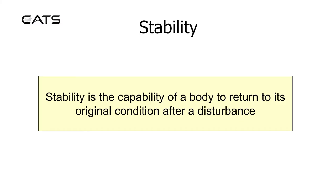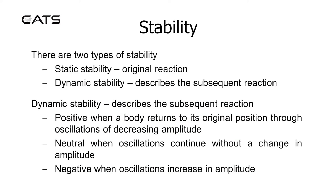Stability is the capability of a body to return to its original condition after a disturbance. There are two types of stability: static stability, which describes the original reaction, and dynamic stability, which describes the subsequent reaction.